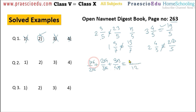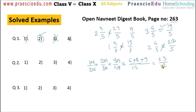Now: 1 times 6 is 6, plus 2 times 4 is 8, plus 3 times 3 is 9. After addition: 6 plus 8 is 14, and 14 plus 9 is 23. So the result is 23 by 12. Converting to a mixed fraction: 12 goes into 23 once with a remainder of 11, so the answer is 1 and 11 by 12, which is given in option number 3.